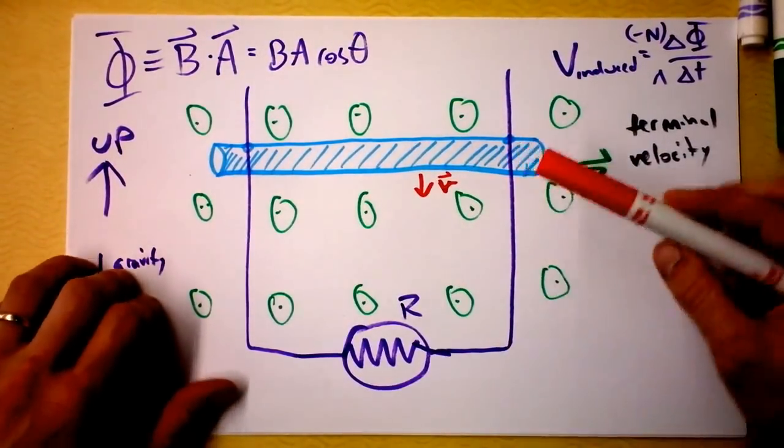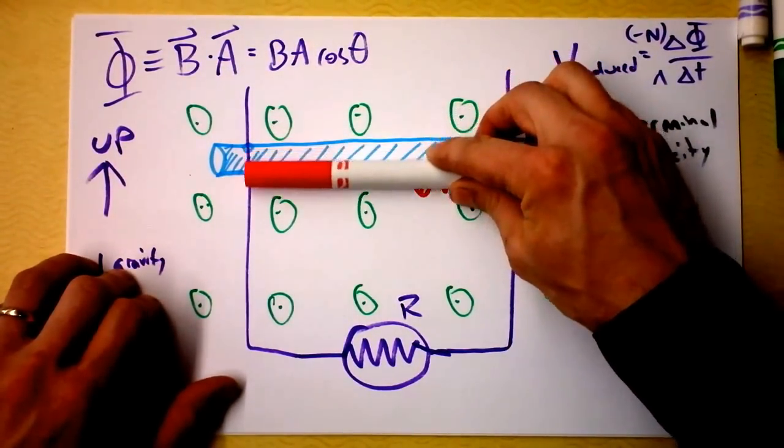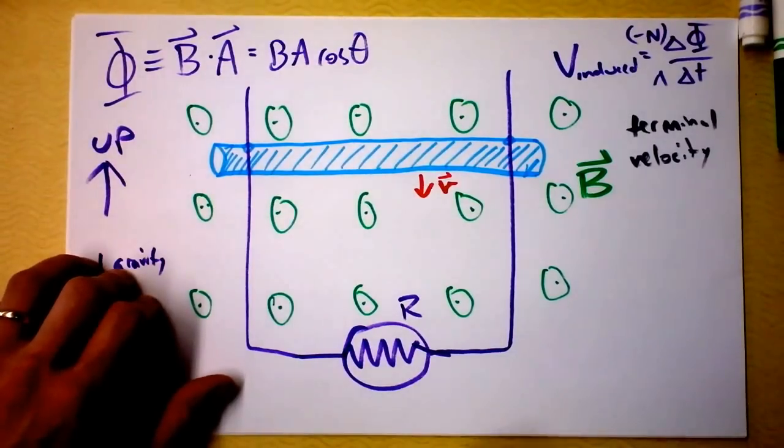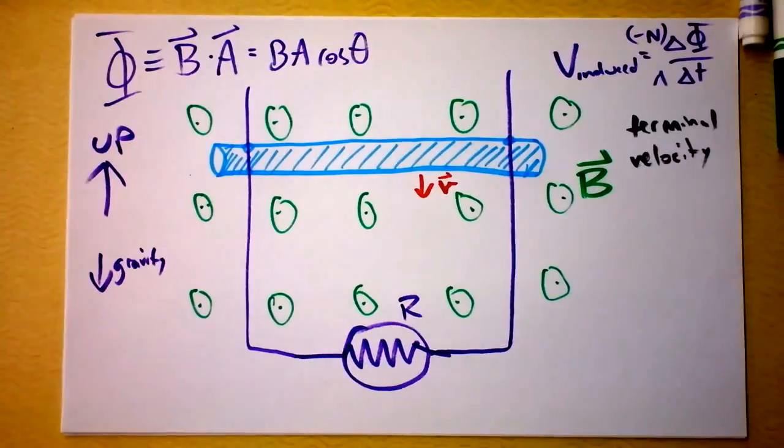There are charges here and they're moving in a magnetic field. So as the rod falls, the charges go down. And which charges are free to move? Is it the positive charges or the negative charges? Of course it is the negatives.